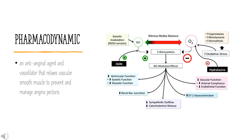Pharmacodynamics: Isosorbide mononitrate is an anti-anginal agent and vasodilator that relaxes vascular smooth muscle to prevent and manage angina pectoris. The pharmacological action is mediated by the active metabolite nitric oxide, which is released when isosorbide mononitrate is metabolized. Nitric oxide works on both arteries and veins, but predominantly veins.